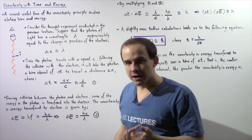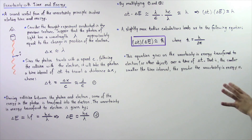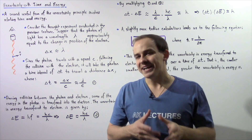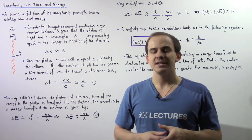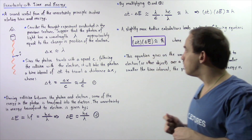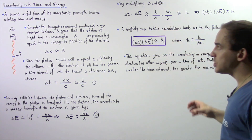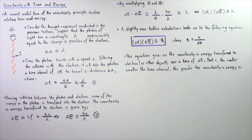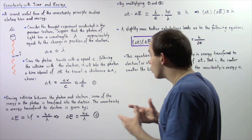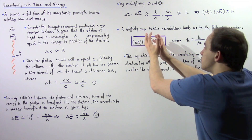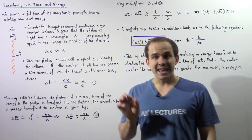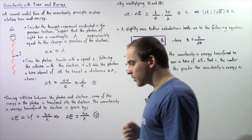A slightly more careful calculation gives us the following equation, which we will state without deriving it here. Delta t multiplied by delta E is approximately equal to h divided by 2 pi, where h divided by 2 pi is given by h-bar. This is the equation for the uncertainty of energy and time. It gives us the uncertainty in energy transferred to an electron over a time interval delta t. The smaller the interval of time, the greater the uncertainty in energy. In the next several lectures, we'll look at examples dealing with both forms of Heisenberg's uncertainty principle.